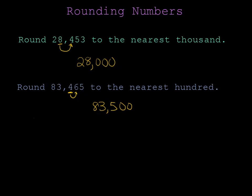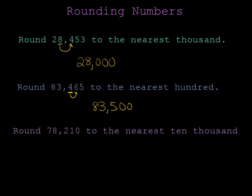Let's try one more example. Round 78,210 to the nearest 10,000. The digit in the 10,000s place is a 7. I'll draw an arrow to my next number, which is an 8. And this number tells me that I have to bump my 7 up to an 8.